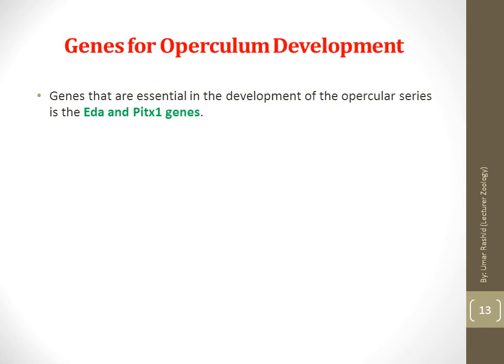There are two genes responsible for the development of the opercular series: the EDA gene and the PITX1 gene. The EDA gene provides instructions for making a protein called ectodysplasin A, which is part of a signaling pathway that plays an important role in development before birth. Specifically, it is critical for interactions between two embryonic cell layers called the ectoderm and mesoderm. The PITX1 gene provides instructions for making a protein that plays a critical role in the development of lower limbs in other animals, except fishes.